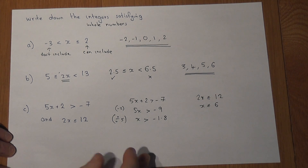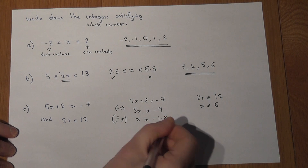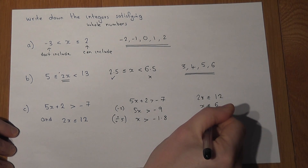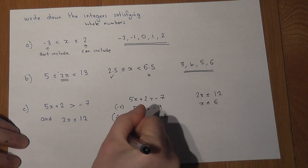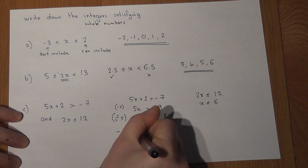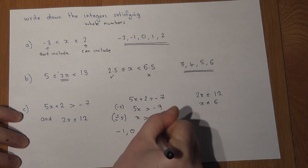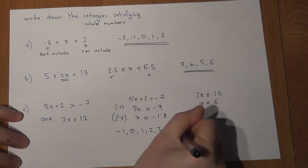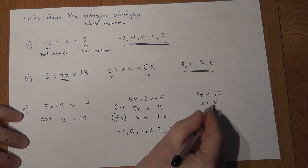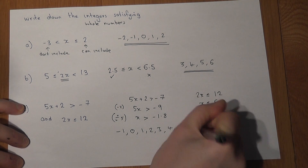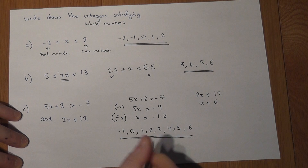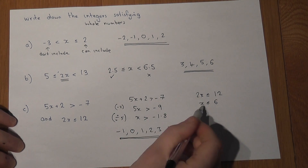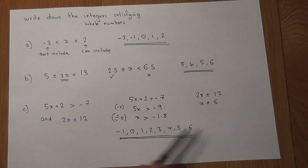So all the whole numbers which are bigger than minus 1.8 but less than or equal to 6: starting at minus 1.8, I get to minus 1 first, then 0, 1, 2, 3, 4, 5. I can include 6, so 6 is my last integer. Therefore those are all the whole numbers or integers which are greater than minus 1.8 but less than or equal to 6.